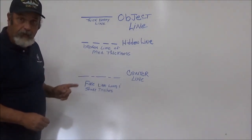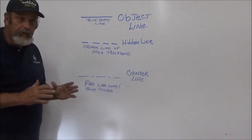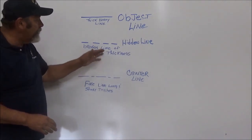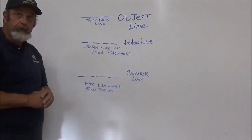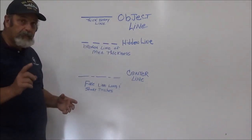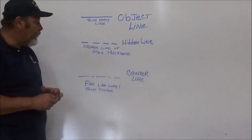Next, you've got to understand the hidden line. The hidden line is a broken line of medium thickness with dashes. This will tell you that there's something there that you can't see, but you better be aware of it.